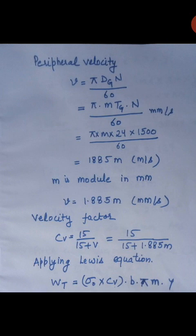Now we will calculate peripheral velocity. V equal to pi Dg N by 60. We replace Dg by m into Tg; Tg is 24 and N is 1500 rpm. We get peripheral velocity in terms of module: V equal to 1885 times m, in meter per second. Since we calculate the value of module in mm, we convert the peripheral velocity: V equal to 1.885 m, in millimeter per second.